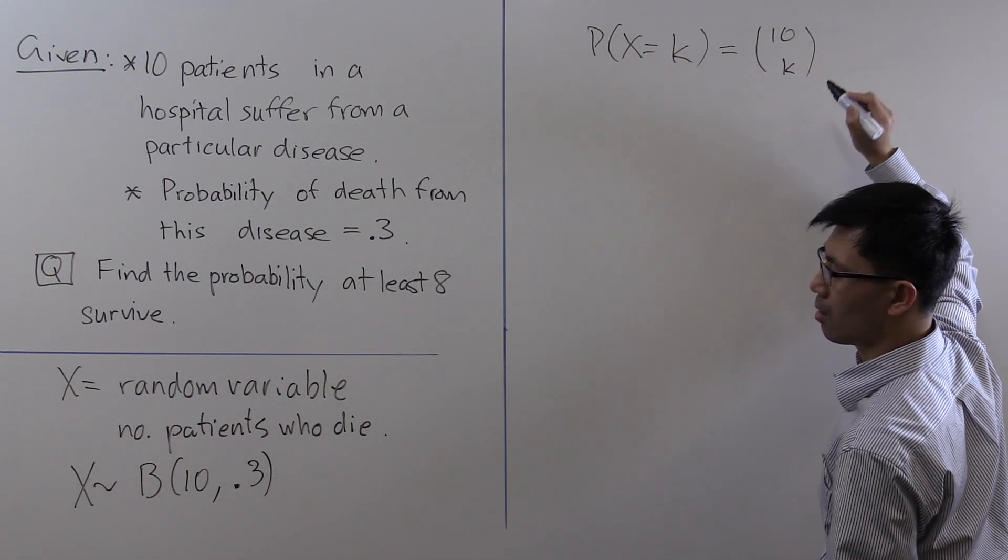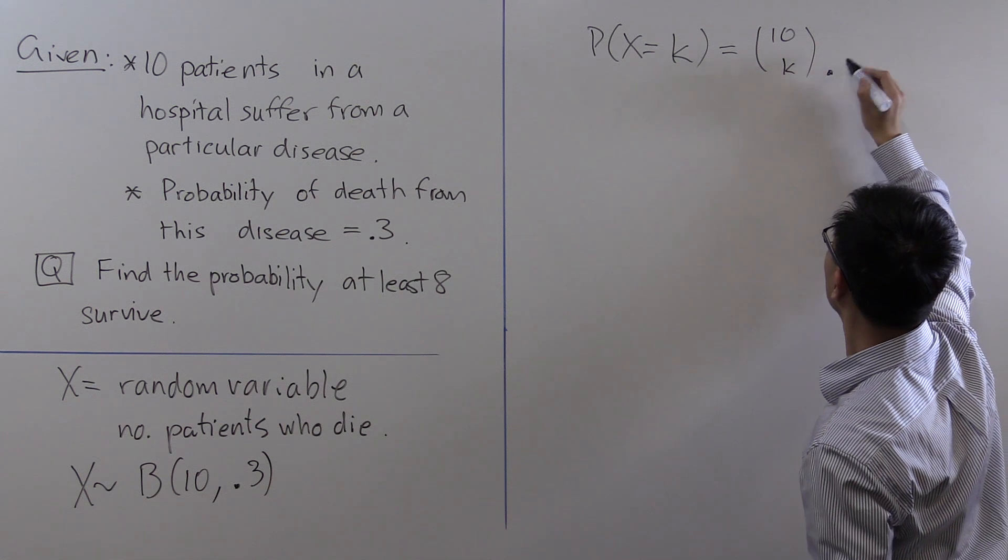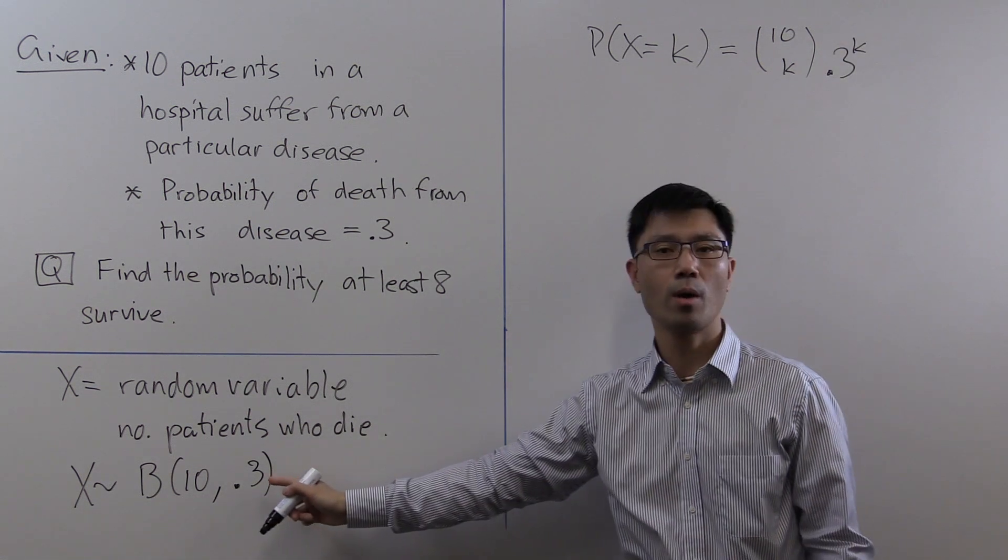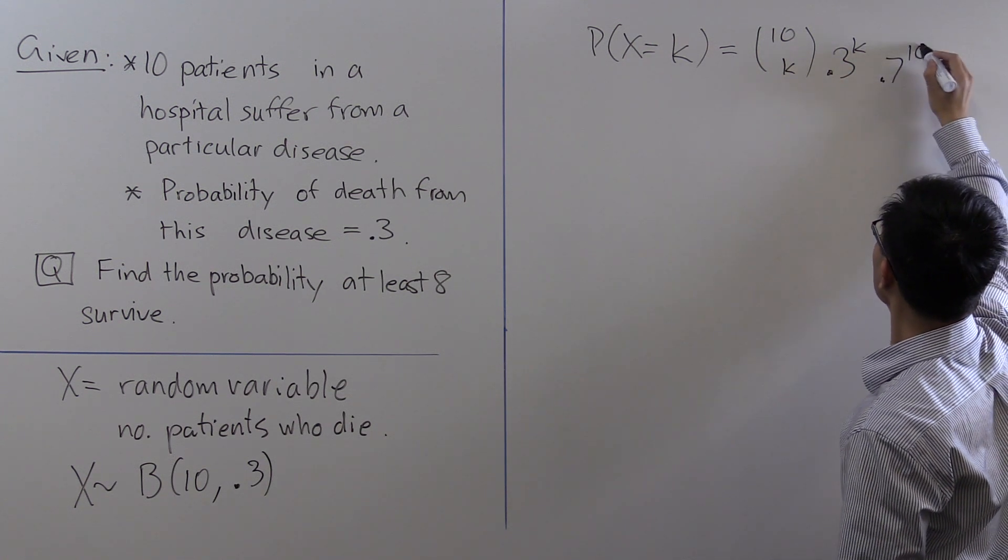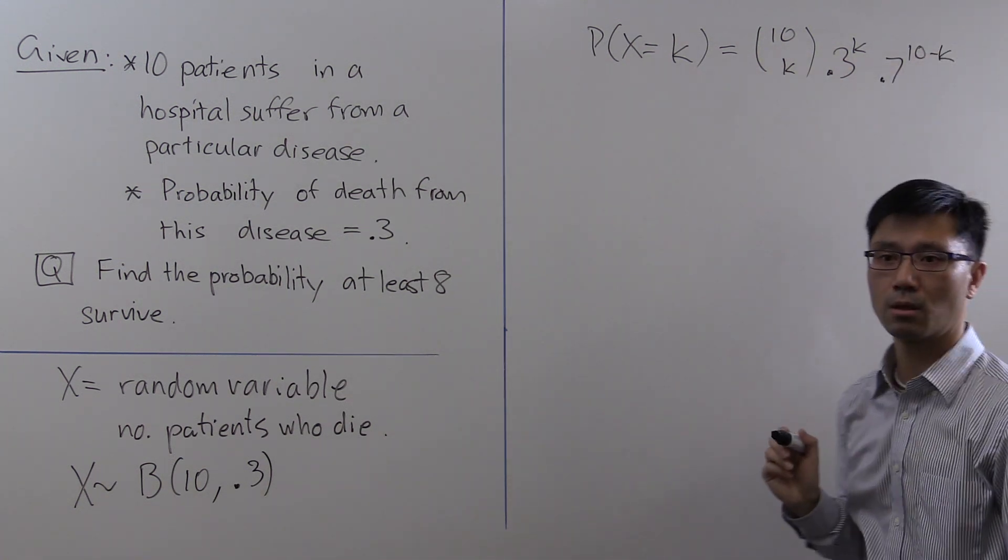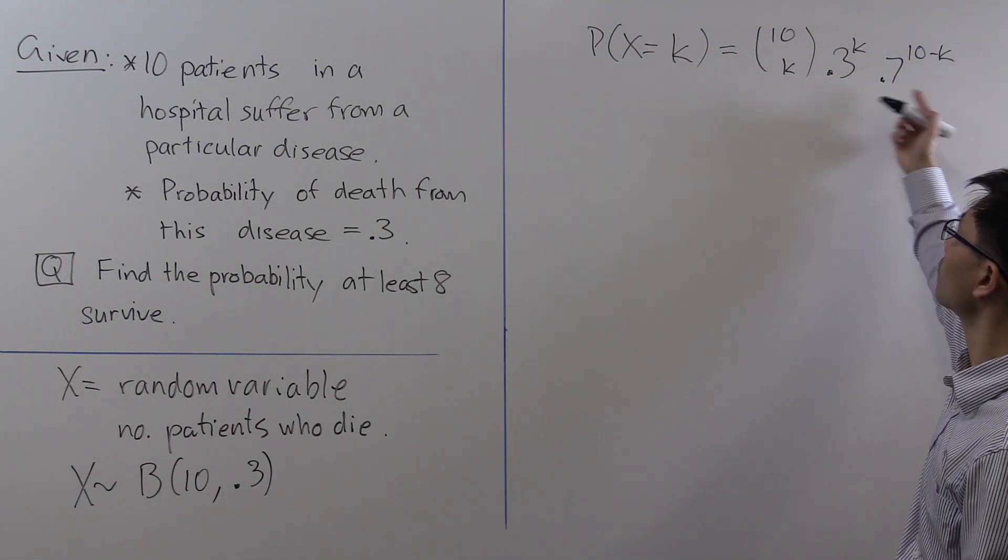times 1 minus 0.3, which is 0.7, to the 10 minus k. It's quite easy to see where this result comes from.